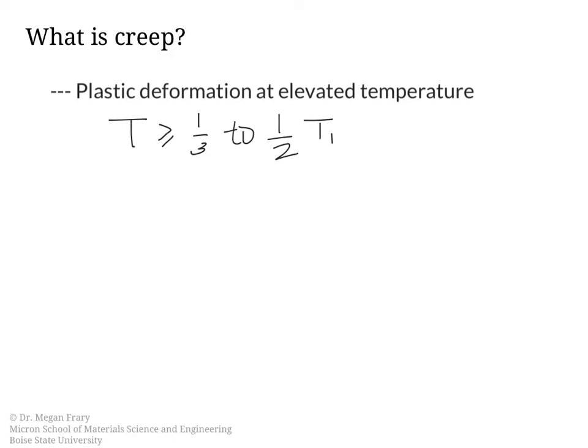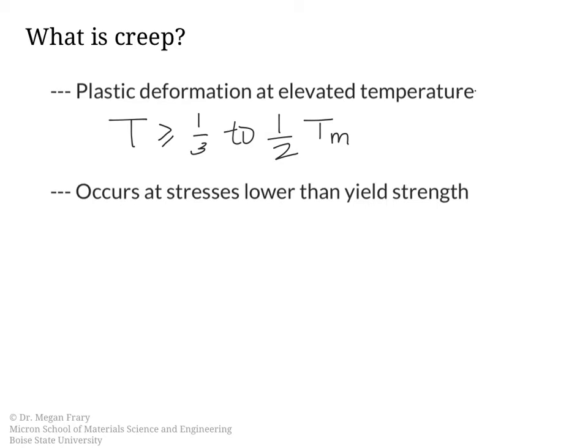For some materials this is a very high temperature, but for some materials creep can actually happen at what we would think of as a relatively low temperature, because it's high relative to their melting point. Ice is an example of that. Another important point about creep is that it occurs at stresses lower than the yield strength. Creep deformation can be unexpected in materials design because you think a stress level is safe — it's below the yield strength — but if the temperature gets too high, creep deformation can occur.